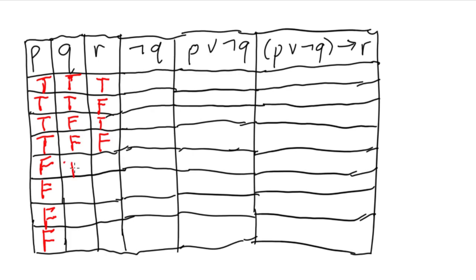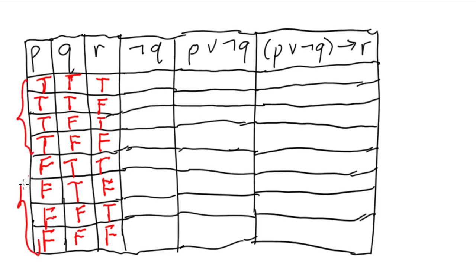For q, we write two truths and two falses repeating: true, true, false, false, true, true, false, false. For r, the pattern alternates every one: true, false, true, false, true, false, true, false. So you can see a clear pattern: divide the rows by two each time for each new column.